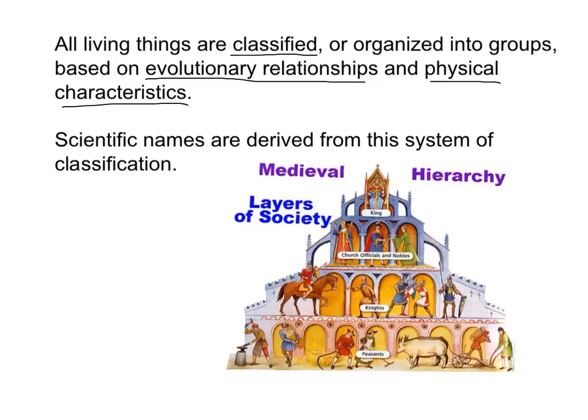One way to think about it is the medieval times. In medieval times, we had a king, we had nobles and church officials, we had knights, and we had peasants. There was a hierarchy — layers of society. The people that had the most power were at the top; they oversaw the most. The people that had the littlest power were down at the bottom — the peasants. They did most of the work in society, but they had very little power. The classification system is similar in this way.